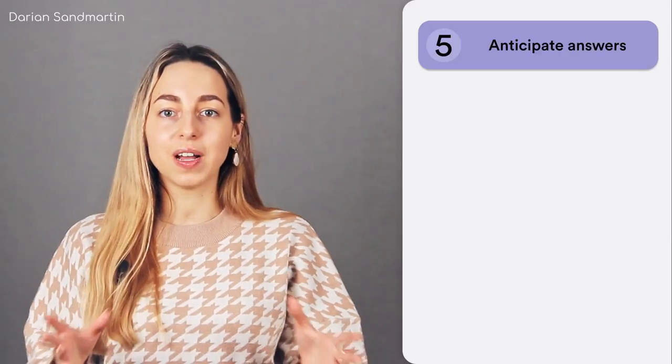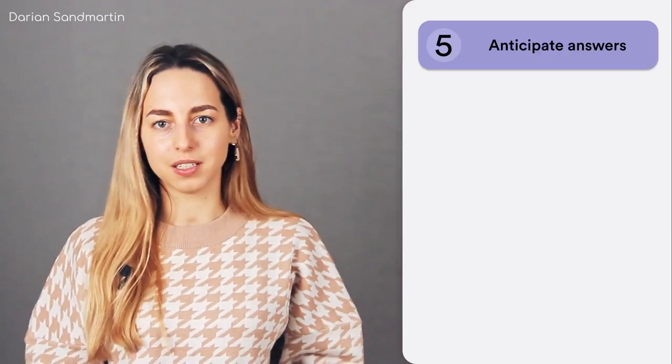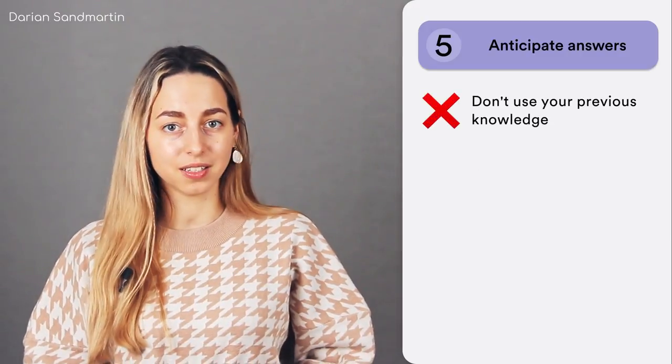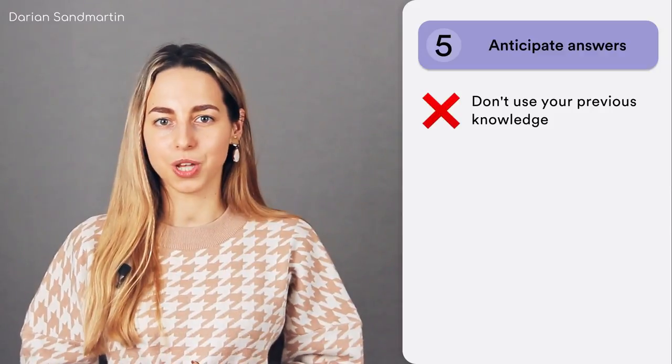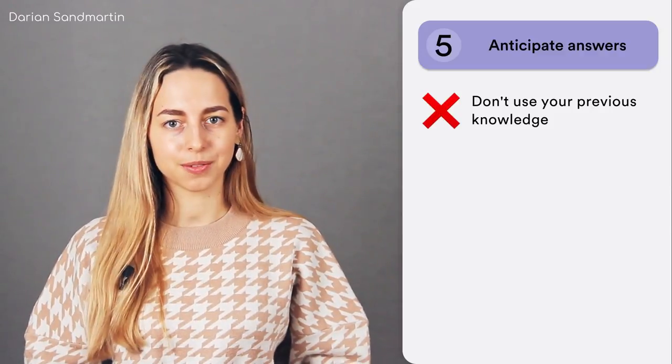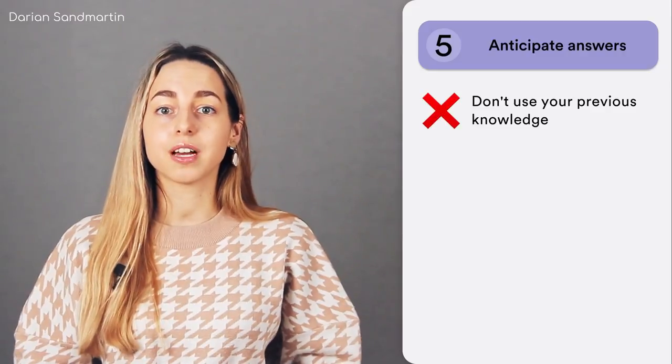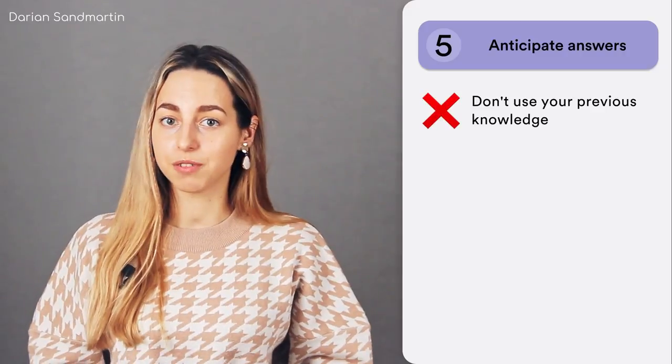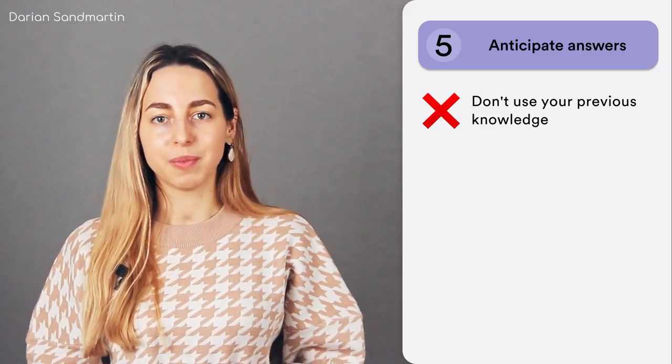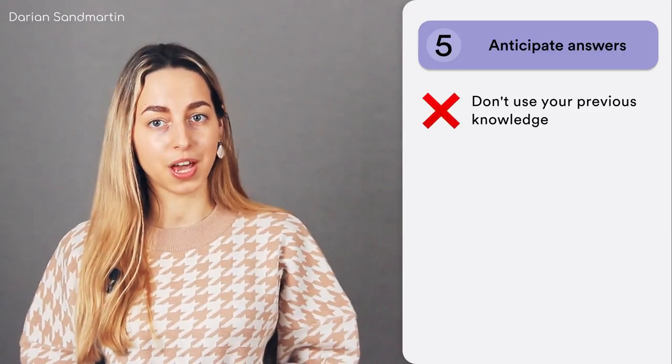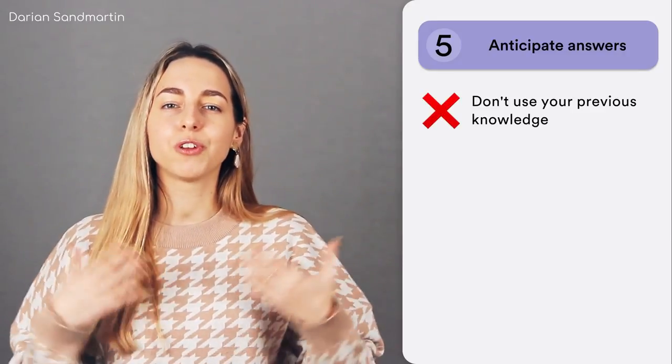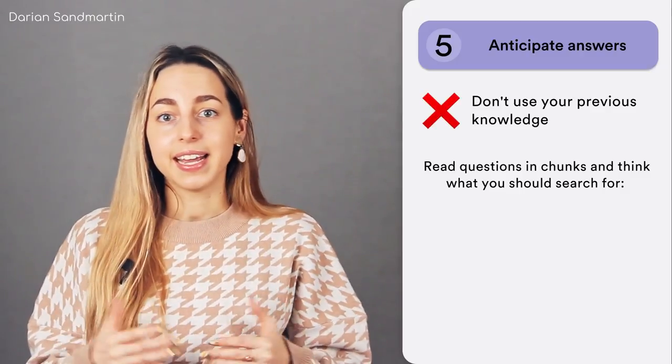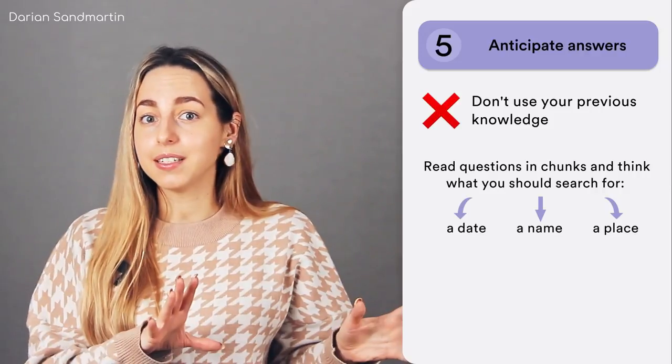Anticipation is when you read a question and then try to predict what might be the answer. However, don't use your previous knowledge on the subject when anticipating an answer. It may be tempting to do so, but this may lead you to faulty conclusions. Considering that you read questions after skimming, the skimming must be profound enough to give you information sufficient for guessing what the answers might be or where exactly in the text to look for them. So my strategy is to read questions in chunks and think what exactly I should search for in the text. Is the answer going to be a date, a name, a place?